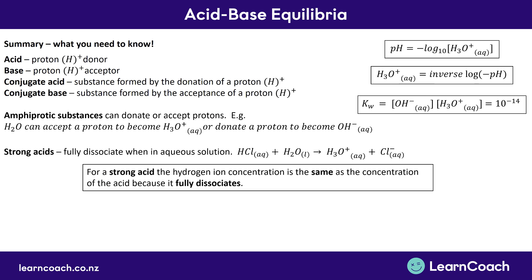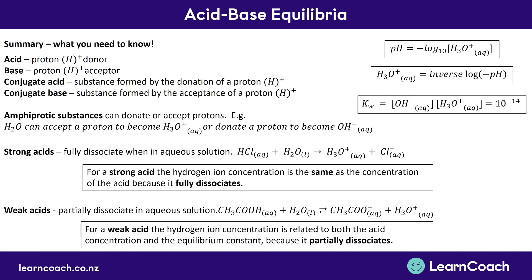You need to know that amphiprotic substances are substances that can donate or accept protons. The key one is water, which can go to H₃O⁺ or become OH⁻. You need to understand that strong acids does not mean concentrated acids — strong acids are acids that fully dissociate in an aqueous solution. HCl is an example and the equation is not reversible. Equally, weak acids partially dissociate in an aqueous solution, so unreacted reactant remains once the equilibrium reaction has completed. Finally, bases obey the same rules as acids, except they form OH⁻ instead of H₃O⁺. Just like there are strong and weak acids, there are strong and weak bases.